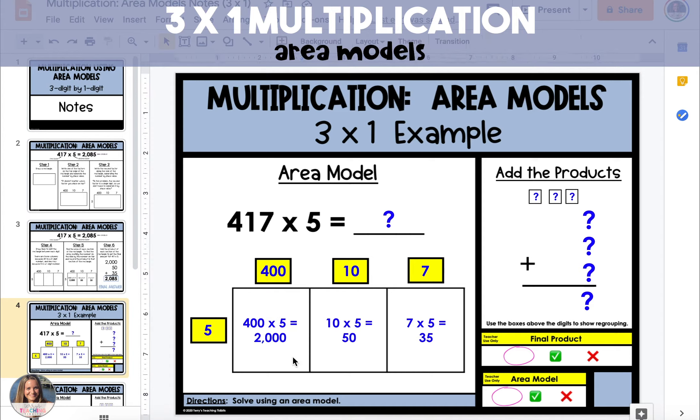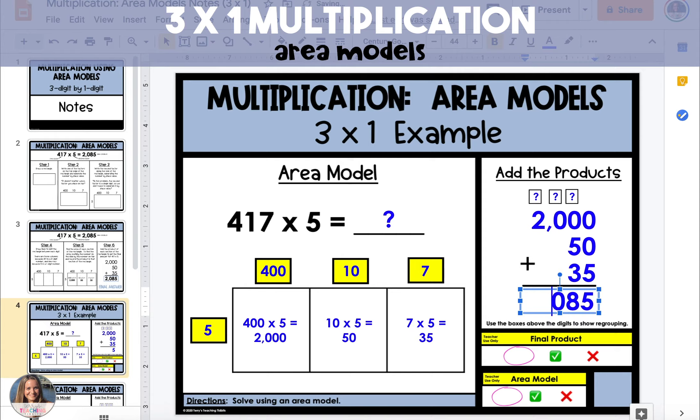And the last thing that we do is we take each of the products in each of the sections and we're going to add them together to find the final product which is 2,085.